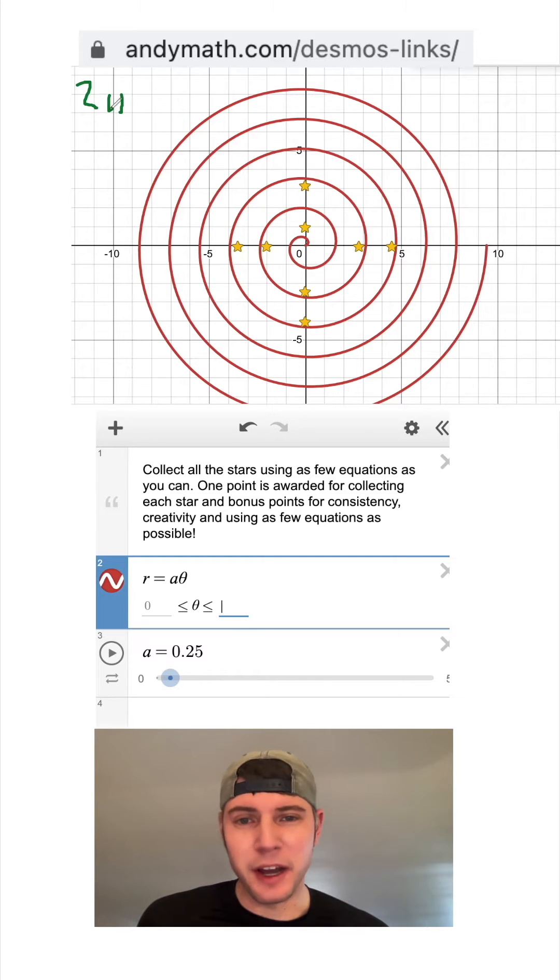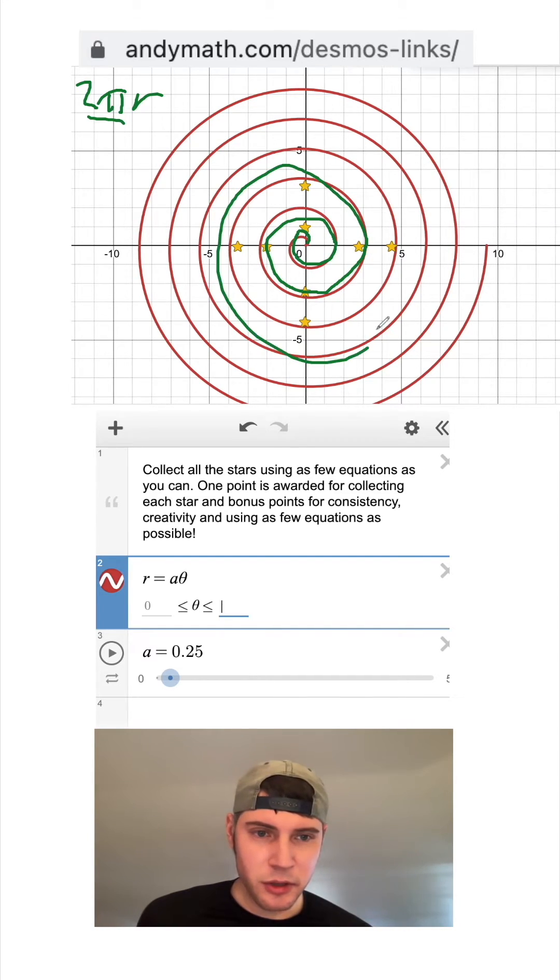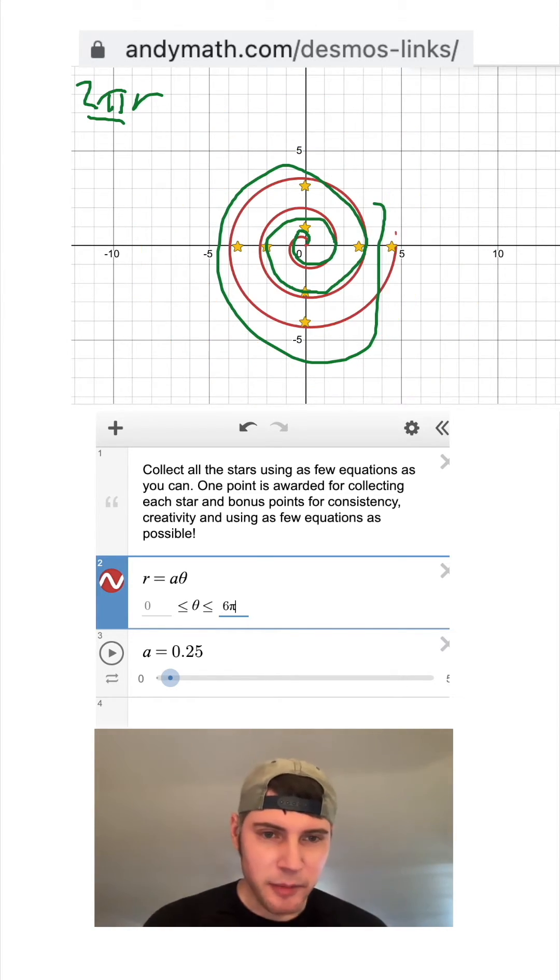The circle is equal to two pi radians. So every rotation of a circle is going to be two pi. So we want to cut this after 1, 2, 3 rotations. And we're going to cut it at 6 pi. And that should stop right where that star is. And yep, there it is.